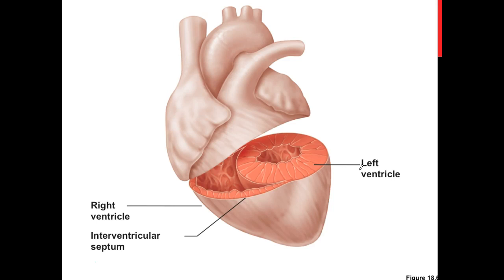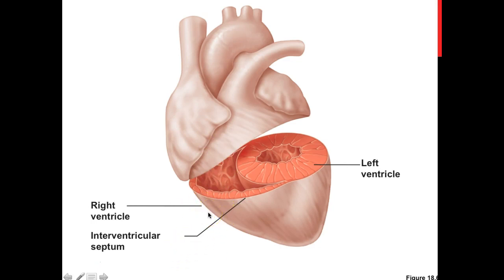The left ventricle is much thicker than the right ventricle because it has to pump blood all throughout your body — it has higher pressure and blood must travel a longer distance. The right ventricle is thin-walled, has lower pressure, and only needs to pump blood to the lungs. Functionally and structurally, the two sides of the heart have differences.